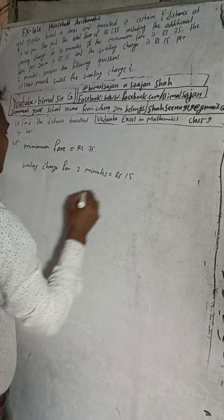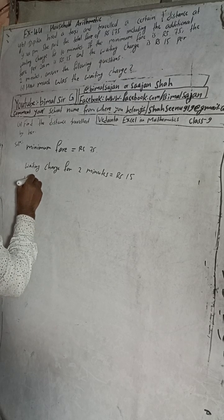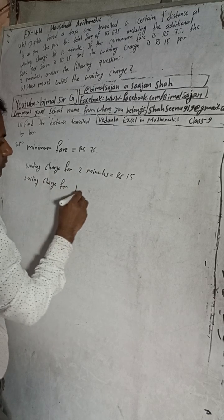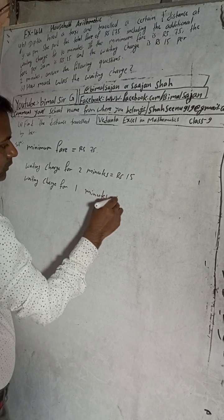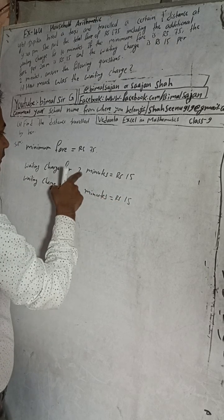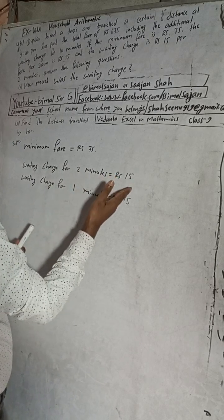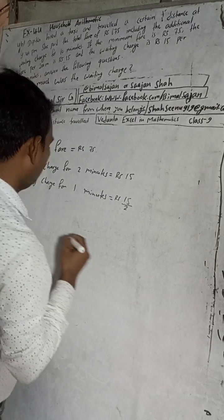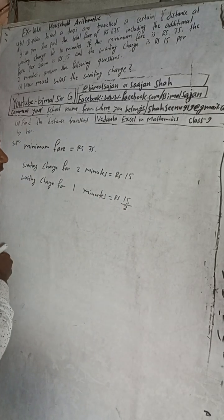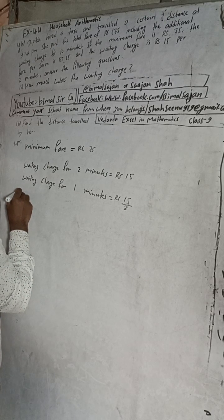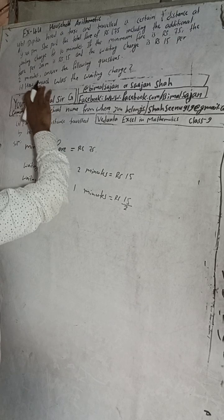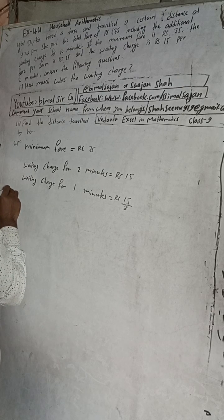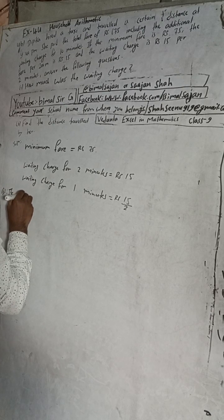By unitary method, we can write: waiting charge for 1 minute is equal to Rs 15 divided by 2. The time decreases from 2 minutes to 1 minute, so the charge will also decrease — for decrease, we divide. So divide by 2.